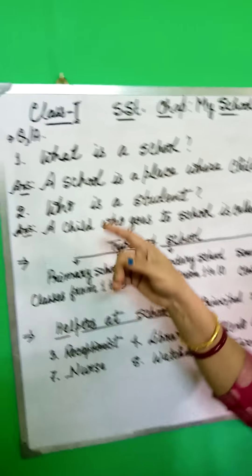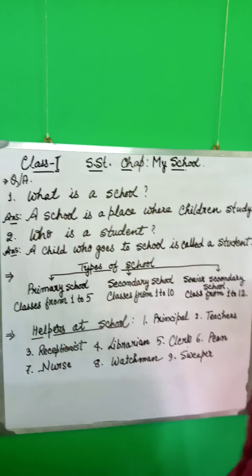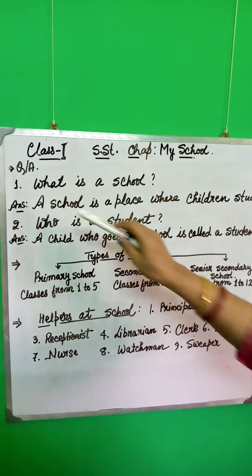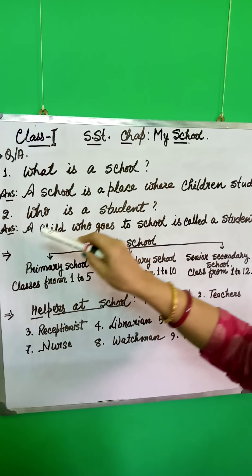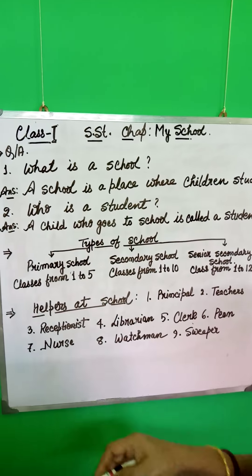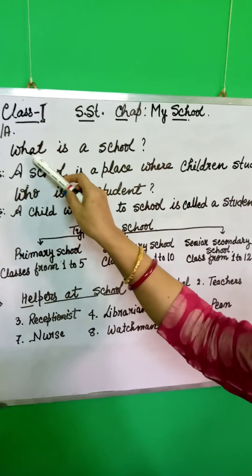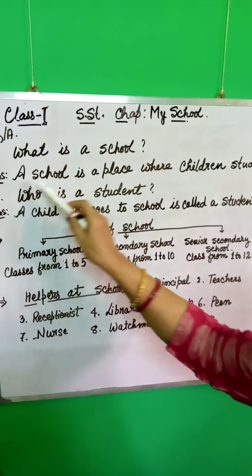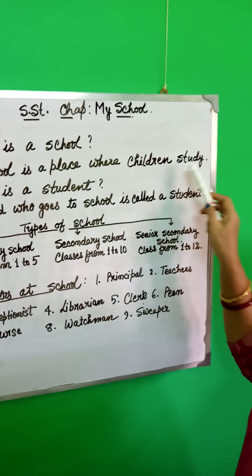See these terms — this is very important, this should be known by you. What is a school? Learn this, write and learn these things. A school is a place where children study.